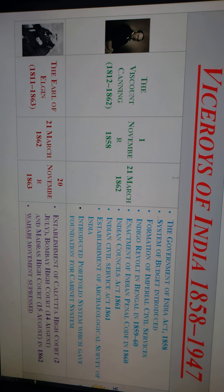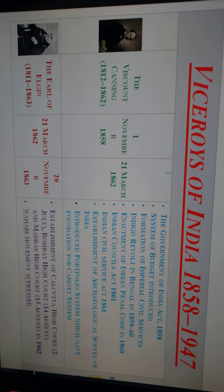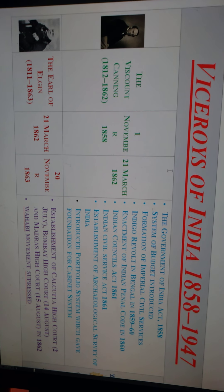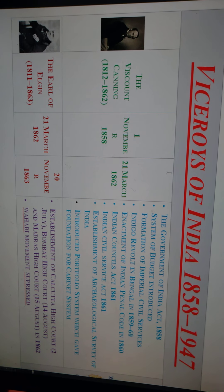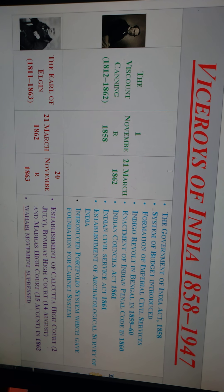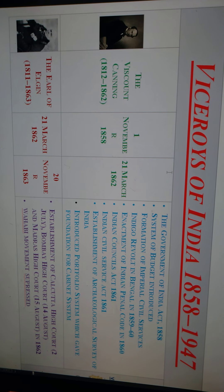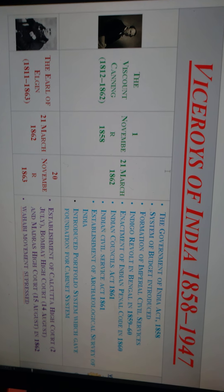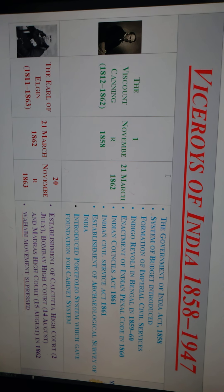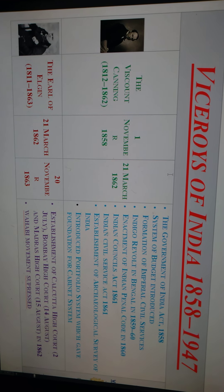The first Viceroy of India was Lord Viscount Canning. You should note that Lord Viscount Canning was also the last Governor General of India for three years, and he was reappointed as the first Viceroy of India, serving from 1st November 1858 to 21st March 1862.